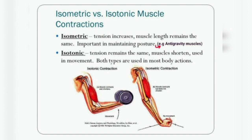Next is isotonic. 'Tonic' means the keyword is contraction and extension. Look at the first image — the person is lifting the dumbbells. The tension remains the same but the muscle is shortening. While lifting the dumbbells, the biceps muscles are contracting. 'Iso' means same, so the tension remains the same but the muscle is contracting or shortening during the movement. In isotonic, muscles are contracting while lifting the dumbbells.